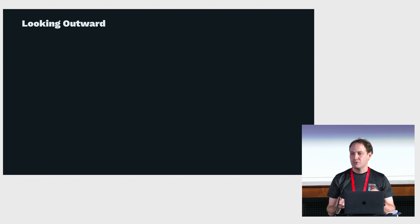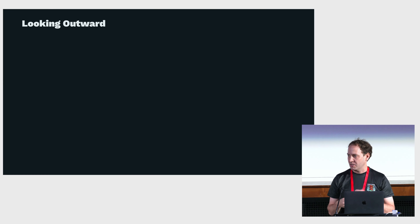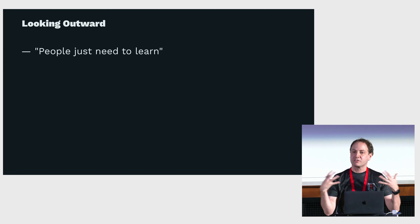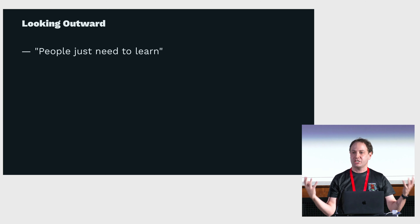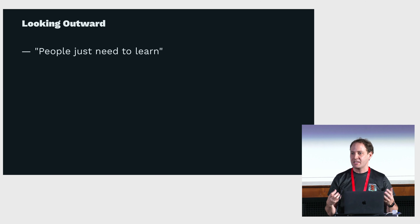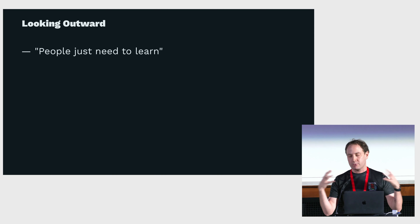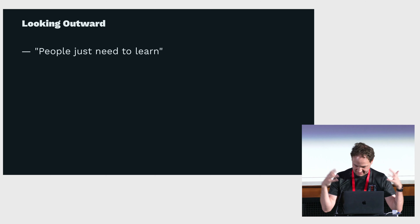There are two approaches to answering that question. One is what I call looking outward — like in a relationship saying it's not me, it's you — looking at other people and saying there's something about them they need to do differently. The most common version is the idea that people just need to learn: if they just looked at 'Learn You a Haskell for Great Good' or what have you, then they would realize how wonderful all this is.